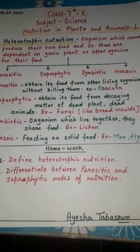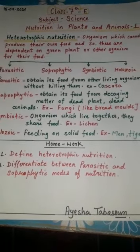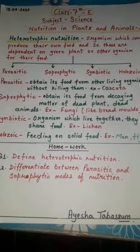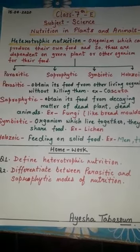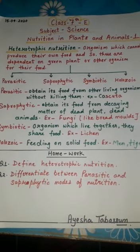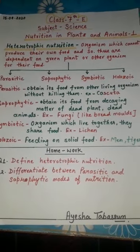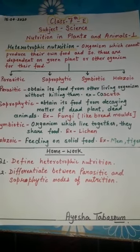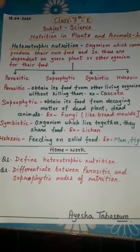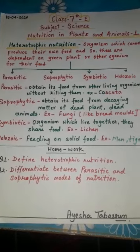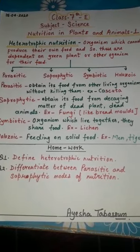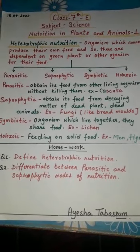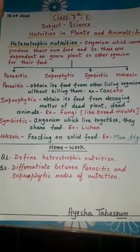Third is symbiotic nutrition. In this mode of nutrition, two different organisms live together and benefit from each other. For example, lichen.